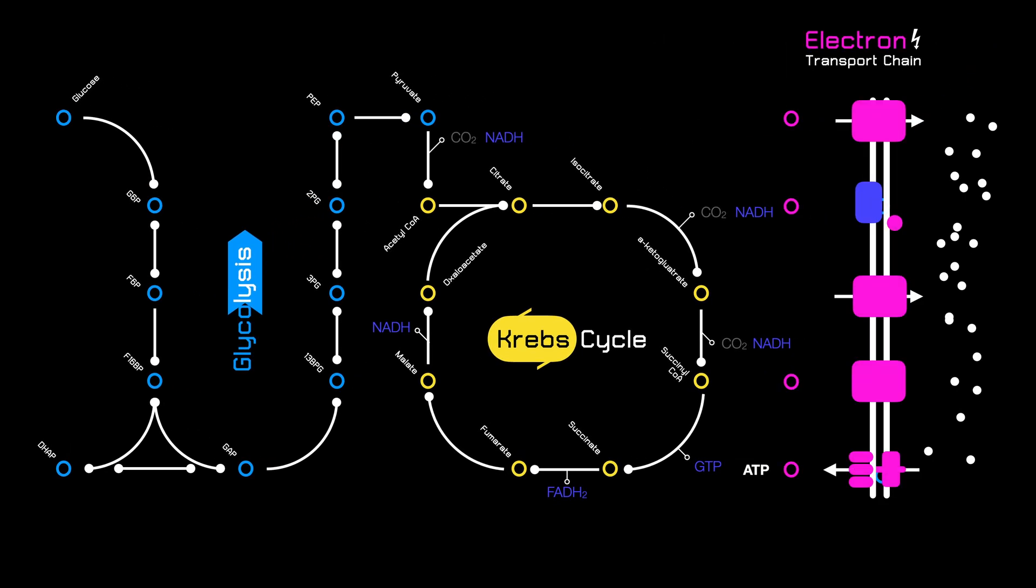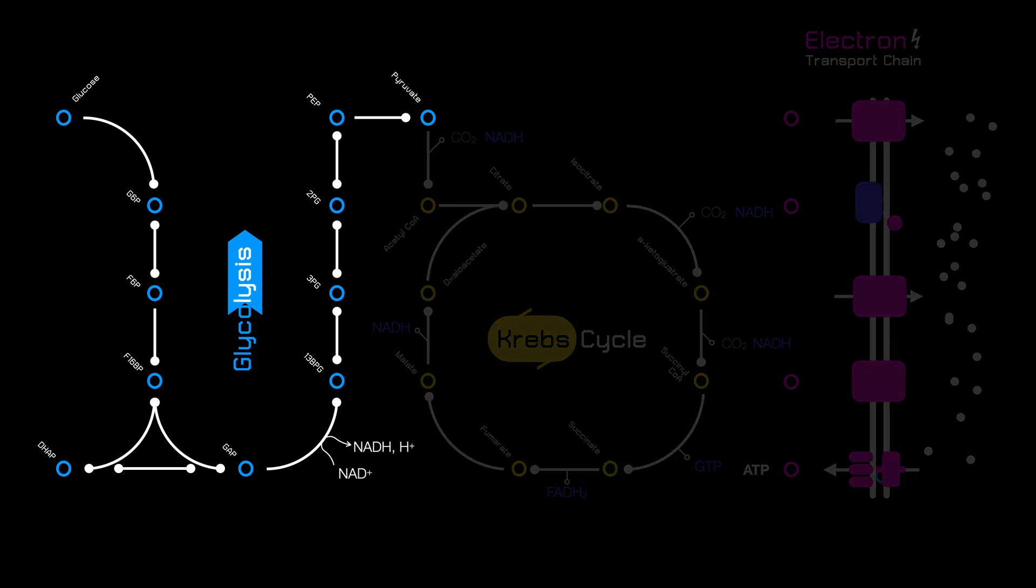If the last two steps are overcrowded or lacking oxygen, glycolysis has its own way of completing the circuit and generating backup ATP instead of using the electron transport chain.